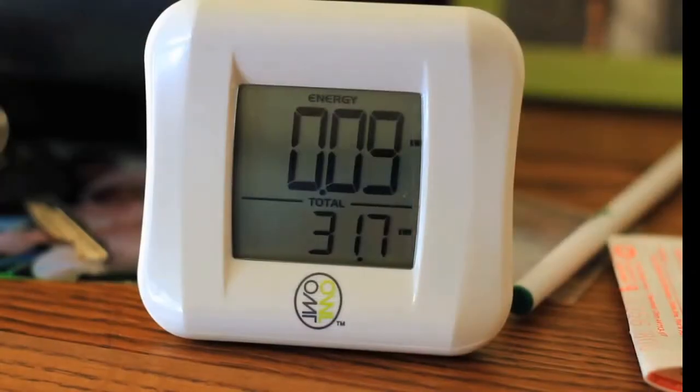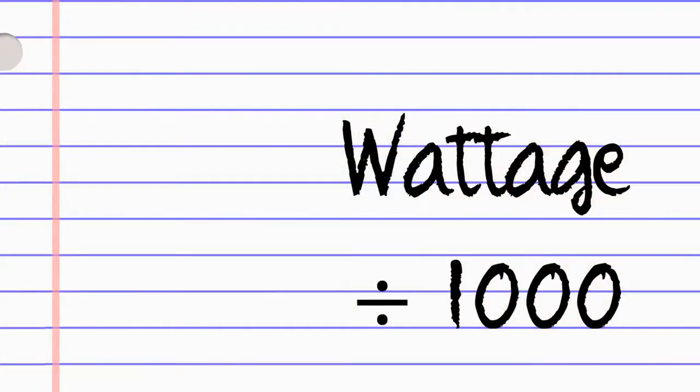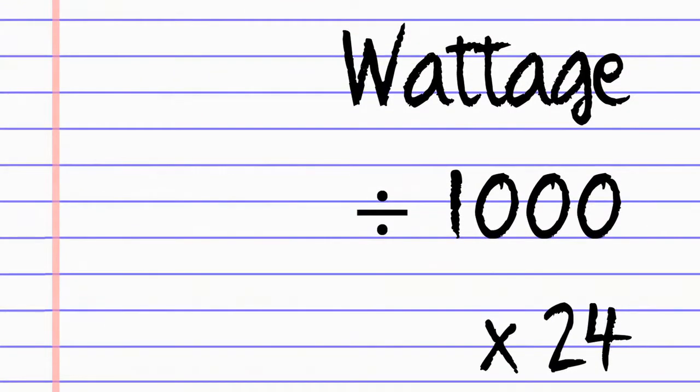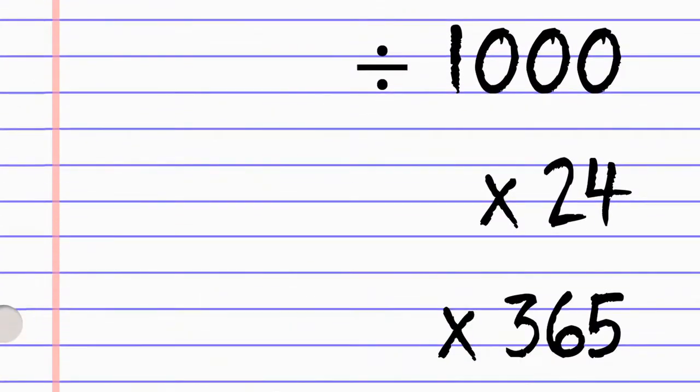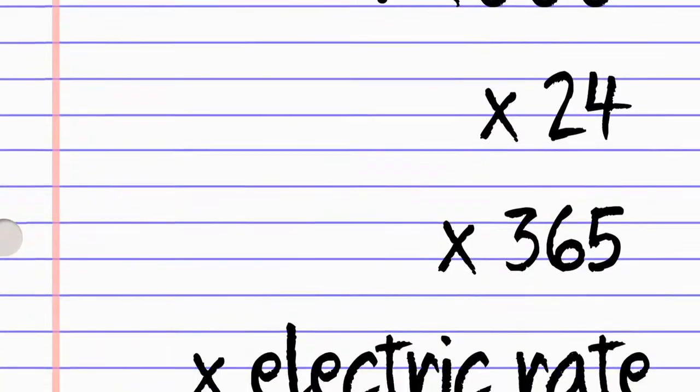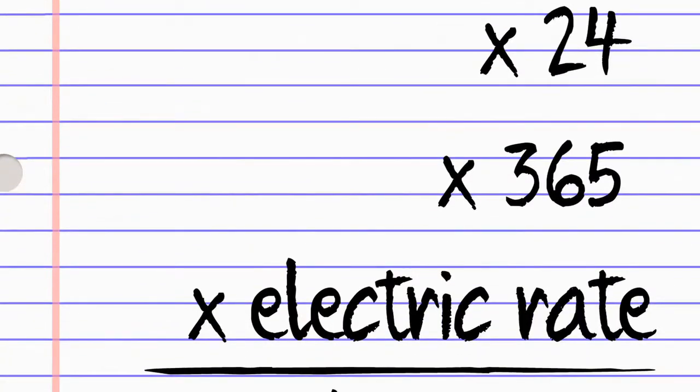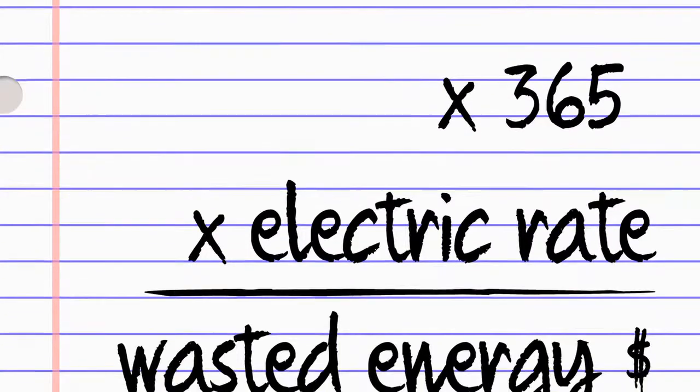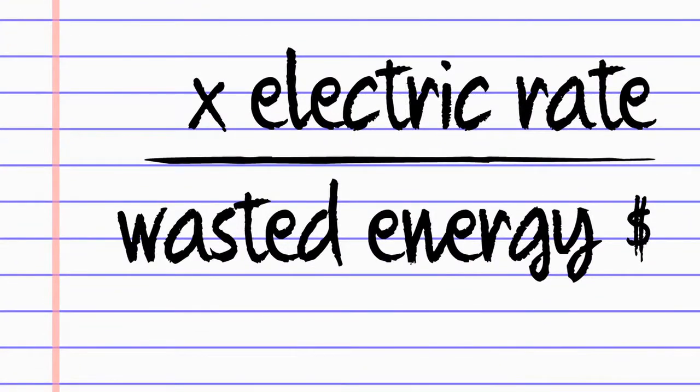Record the wattage reading on the power monitor. Divide this number by 1000, multiply it by 24, and then multiply it again by 365. Multiply this number again by your electric rate. Now you have the amount of money you are wasting each year due to appliances that are plugged in but not being used.